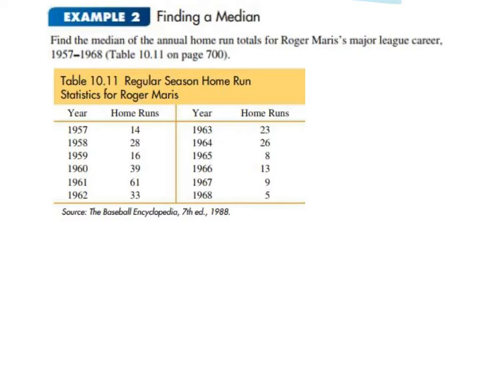We're asked to find the median of the annual home run totals for Roger Maris' major league career. To calculate the median, I need to list the number of home runs attained each year in an ascending list. Since there are twelve entries in the data, which is an even number, we want to find the average of the middle two, which are the sixth and the seventh. Well, 16 and 23 add to 39, so they average to 19.5, which is the median.